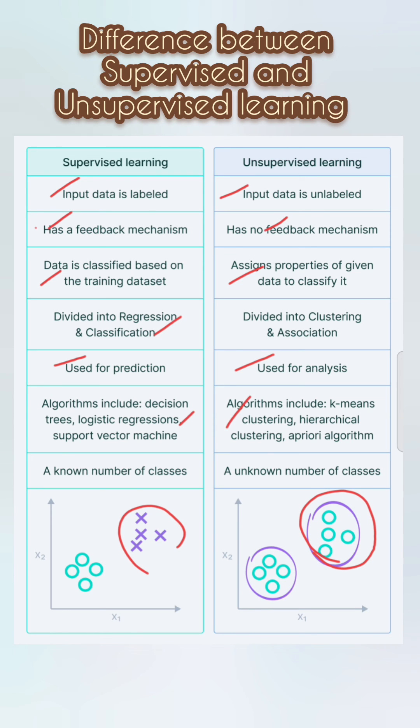Point seven: in supervised learning there is a known number of classes, whereas in unsupervised learning there is an unknown number of classes.